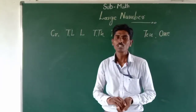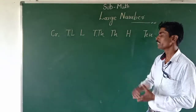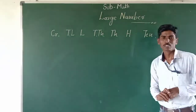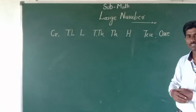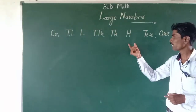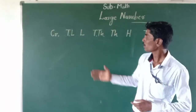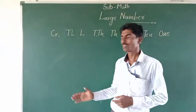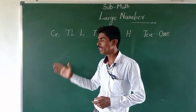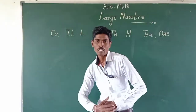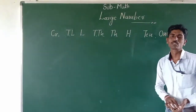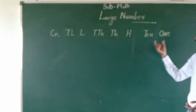First of all we have to know about the digits of a number — that is ones, tens, hundreds, thousands, ten thousands, lakhs, ten lakhs, and crore. These are the digit places of a number, and due to the digits we have to know the numbers and their values.